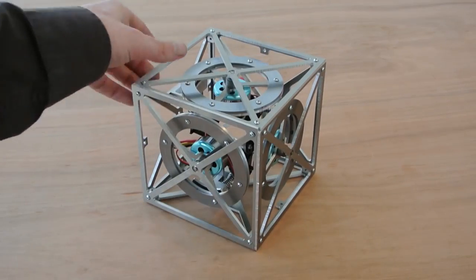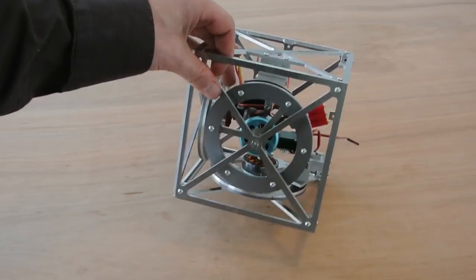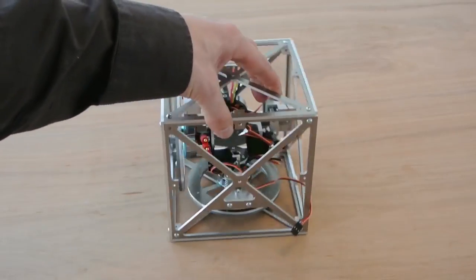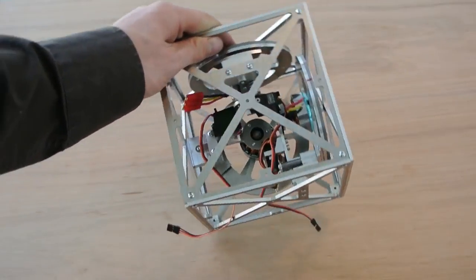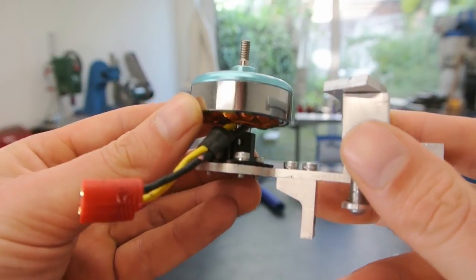In a previous video I finished all the machining of the cube. Check that out if you haven't seen it yet. In this video I'm gonna start with the electronics slash control part of the cube.